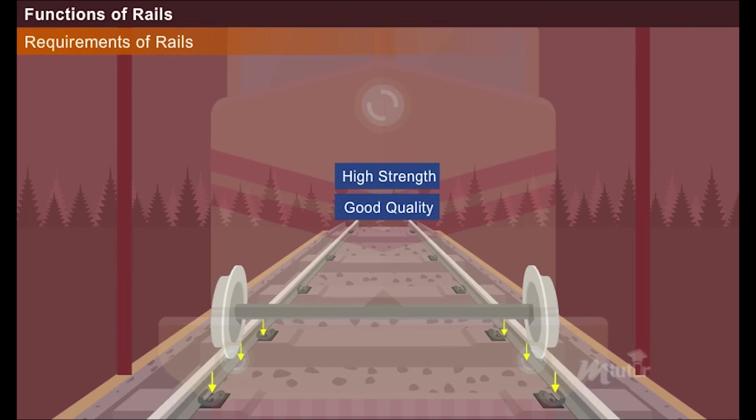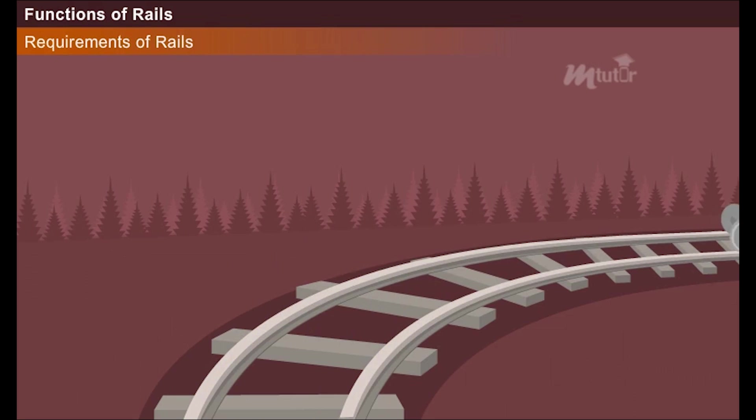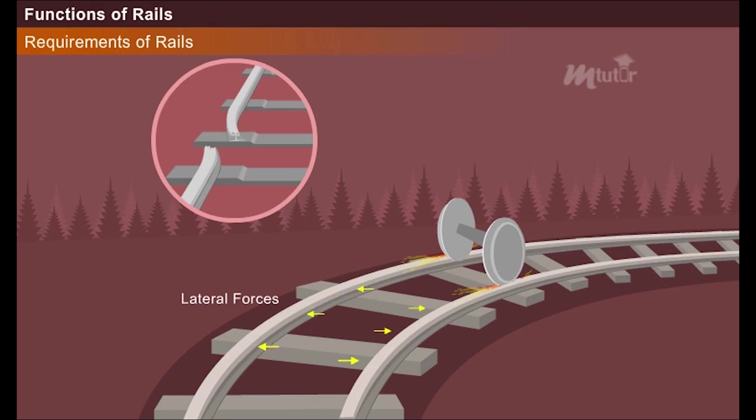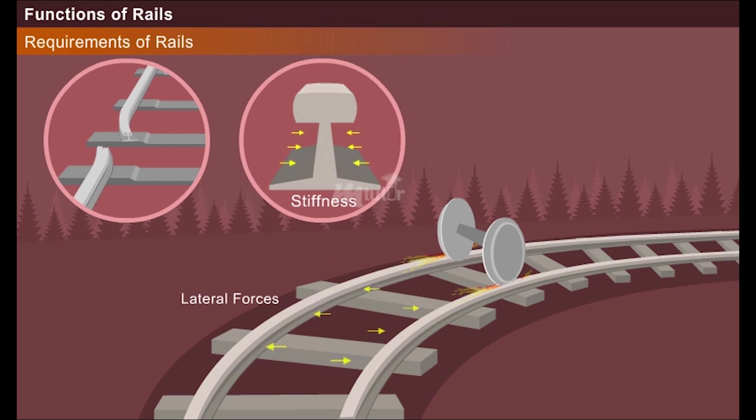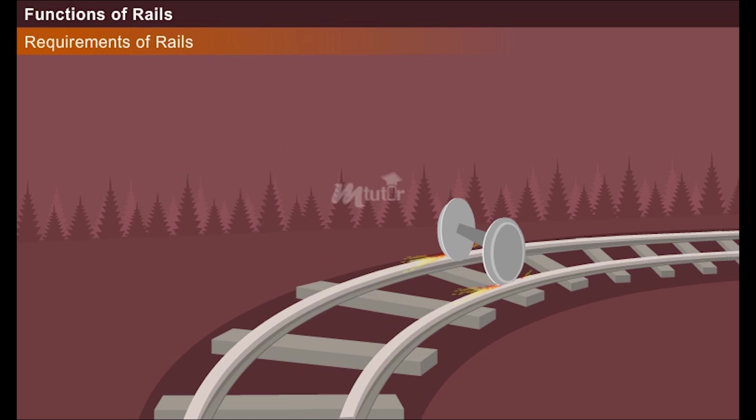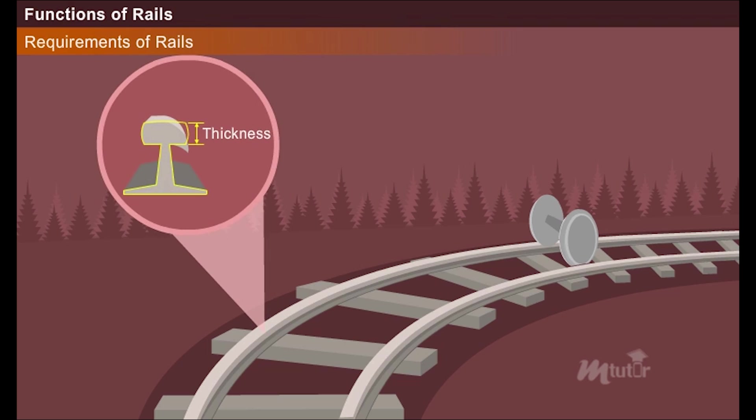At the curves, along with the wheel loads, the rails also experience lateral forces which can rip a rail line apart. Hence a rail should have an adequate lateral and vertical stiffness to resist these forces. Further, the thickness of the rails decreases upon constant rubbing and pounding of wheels. To balance this, the rails must have sufficient thickness and wear resistance.